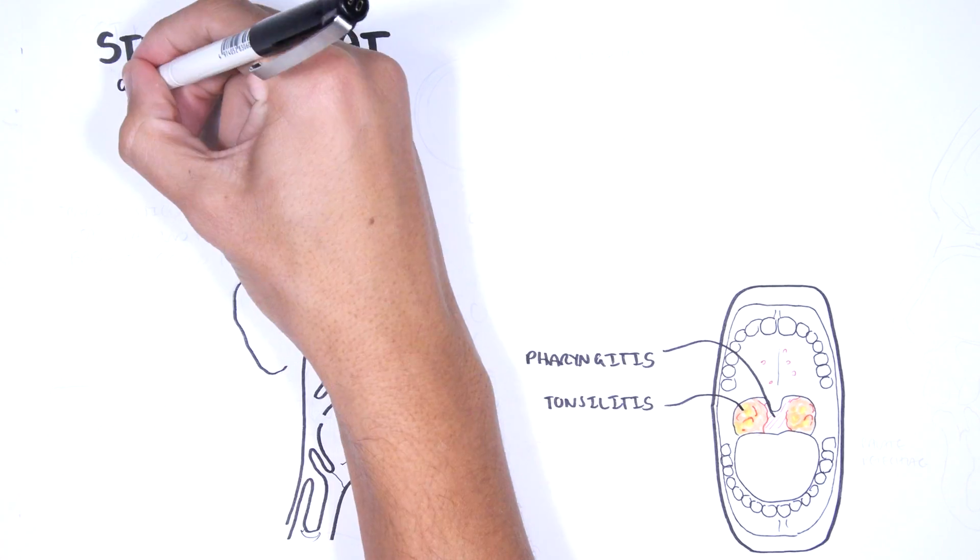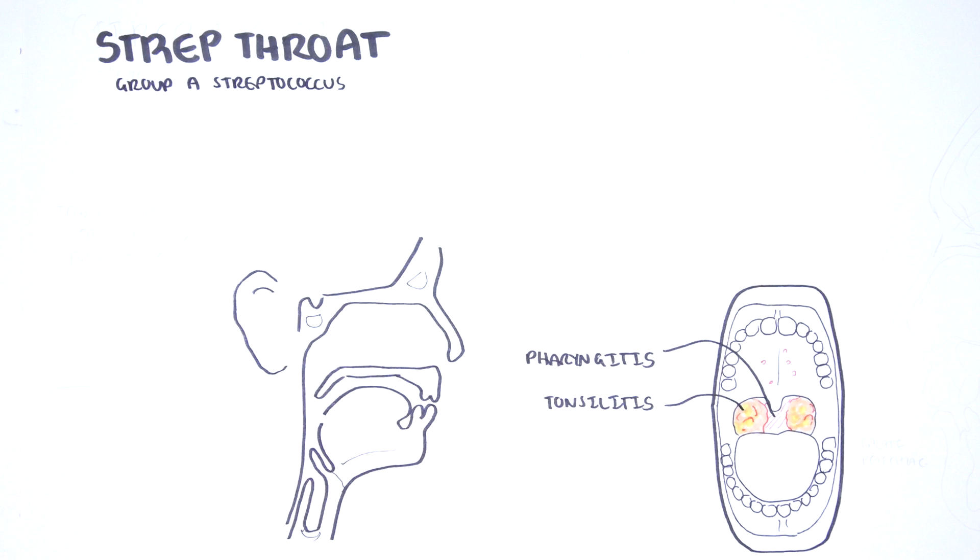The majority of episodes of pharyngitis are caused by viral infections, which are usually treated conservatively. However, early recognition of Streptococcus pyogenes is important since failure to appropriately treat strep throat may lead to Group A Streptococcus complications. Unfortunately, distinguishing between viral and bacterial causes can be difficult.